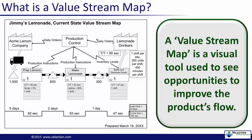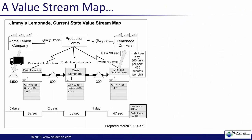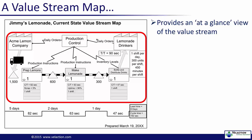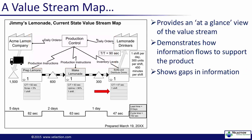Here is a sample of what a value stream map might look like. In this example, we look at Jimmy's lemonade stand. He does a pretty brisk business and now needs to streamline his process in order to keep meeting customer demand. The top section highlights how materials and information flow through the value stream. Information flow is generally shown in the top middle of the map. In this way, it is easy to connect information transfer between suppliers, customers, and the different processes within the company.